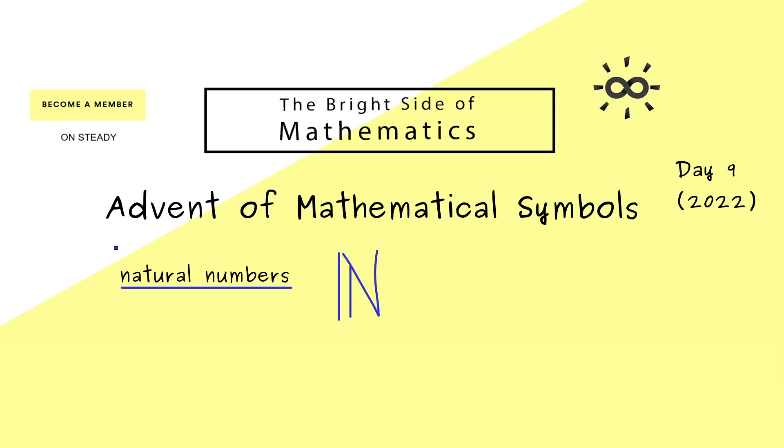They are called natural because you use them for counting. However, sadly there is no consensus with which number you should start counting. Therefore, you usually find two competing definitions.